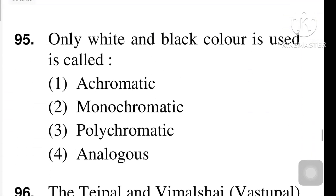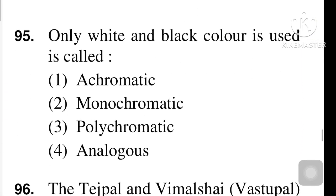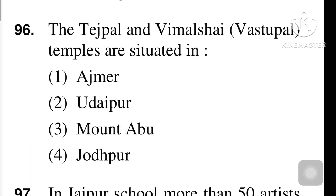Next question: when only white and black color is used, it is called — option number one, Achromatic, is the right answer. Next question: the Tejpal and Vimal Shah, Vastu Pal temples are situated in Ajmer, Udaipur, Mount Abu, or Jodhpur. Option number three is the right answer — Mount Abu, built in the 11th to 13th century.